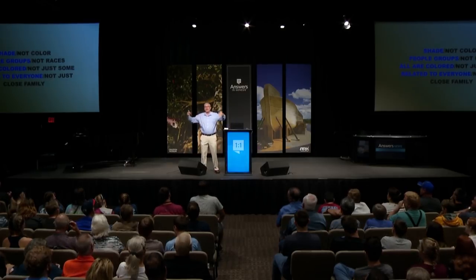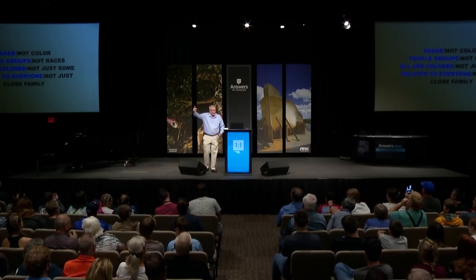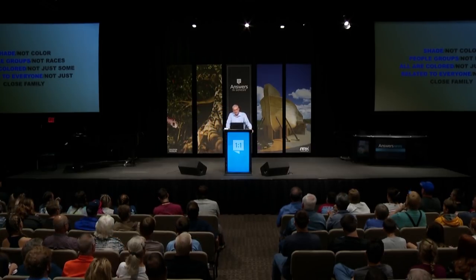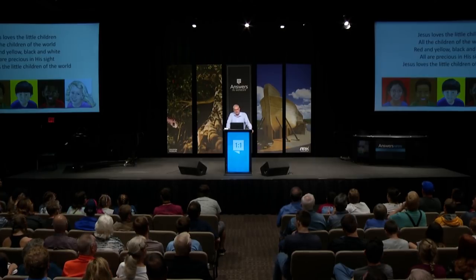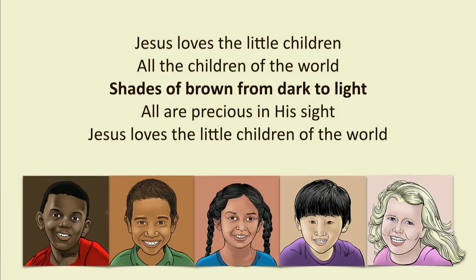Can you imagine if Christians started doing this sort of thing and became a witness in the community? And then those songs we learn — who remembers this one? 'Jesus loves the little children, all the children of the world, red and yellow, black and white, all are precious in his sight.' Actually, that teaches kids wrong ideas. Imagine if we taught generations of kids this instead: 'Jesus loves the little children, all the children of the world, shades of brown from dark to light, all are precious in his sight.' Now that gives you the right idea.